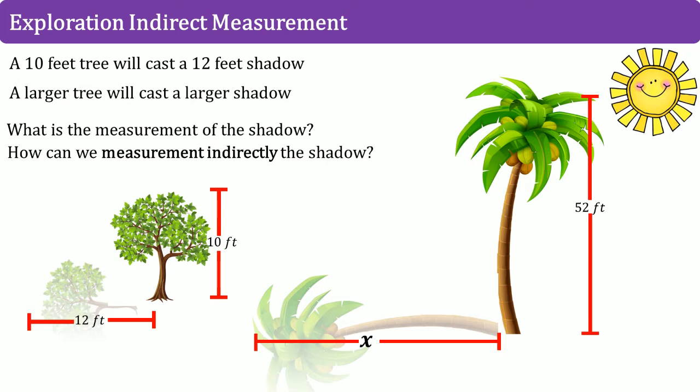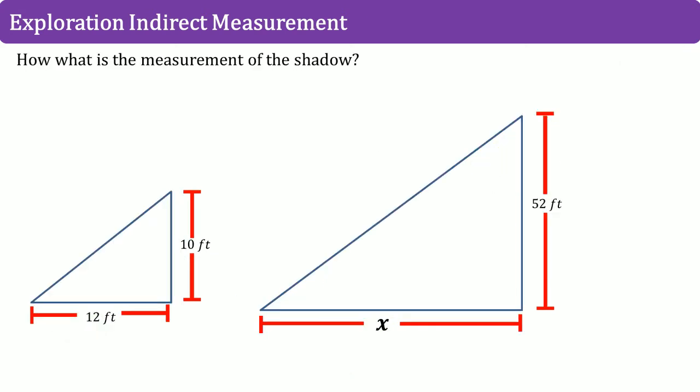It's the ability to measure something using proportions and ratios. So, what are the measurements of the shadow? In this scenario, the shapes create a right triangle. The smaller tree was 10 feet high and 12 feet across. Then the palm tree was 52 feet tall and X feet across.